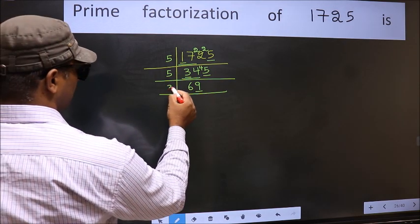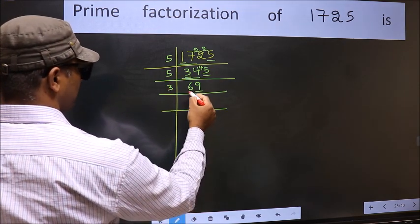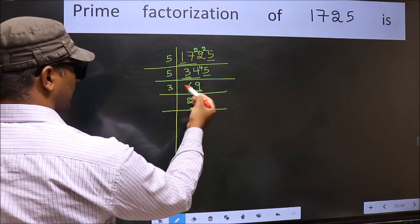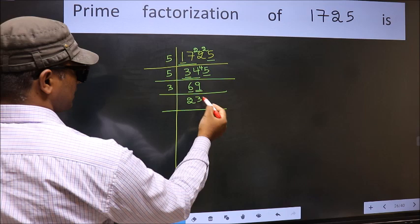So you take 3 here. First number 6, when do we get 6 in 3 table? 3, 2, 6. The other number 9, when do we get 9 in 3 table? 3, 3 is 9.